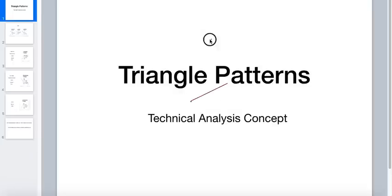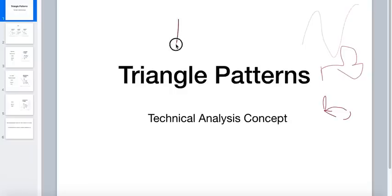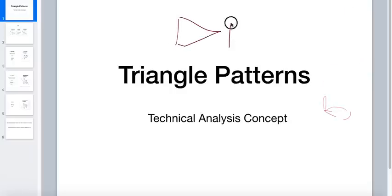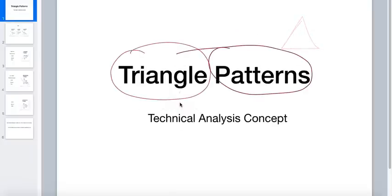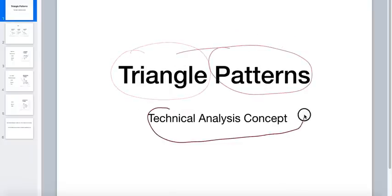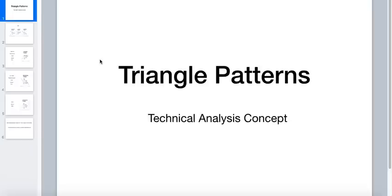Basically, what are price patterns? When candlestick price moves, it creates a pattern. Just like it can create a car pattern or a dog pattern, if the price movement creates a triangle shape, we call it a triangle pattern. We are going to discuss these in this video. I will make it simple and clear so that everyone — whether you are an expert or a beginner — should understand.